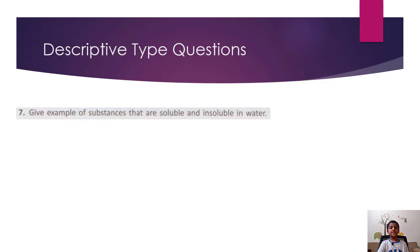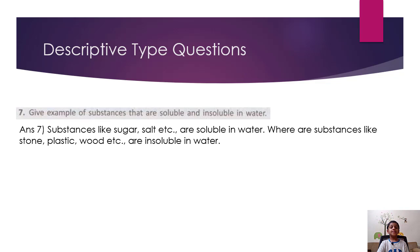Give examples of substances that are soluble and insoluble in water. Substances like sugar, salt, etc., are soluble in water, whereas substances like stone, plastic, wood, etc., are insoluble in water.